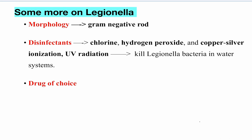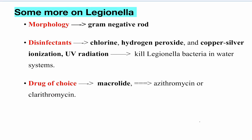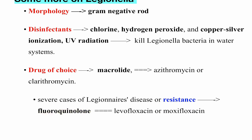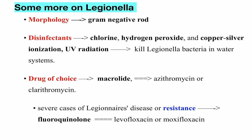Drug of choice: Pontiac fever is self-limiting so no treatment needed. For Legionnaire's disease pneumonia, the drug of choice is a macrolide — azithromycin or clarithromycin. Remember macrolides as a 'big ball' you throw — azithromycin, clarithromycin. If there is a severe case or resistance to macrolides, use fluoroquinolones such as levofloxacin or moxifloxacin. If you can remember just 'macrolide,' that's more than enough.